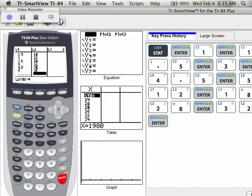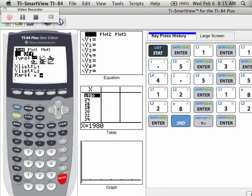I can turn my plots on with second y equals, enter enter turns it on. You notice that we have a scatter plot which is the first selected graph. List one is X, list two is Y. I like the pluses and then we always do zoom 9.